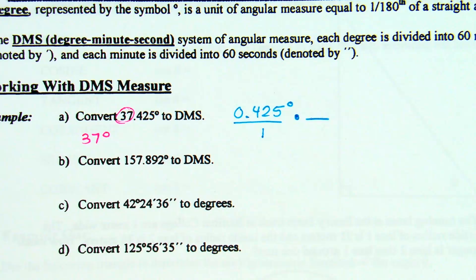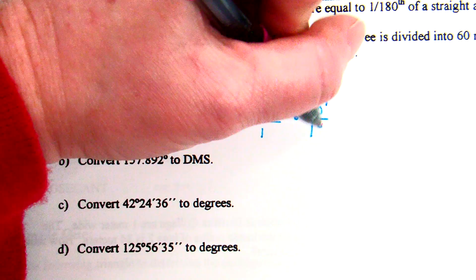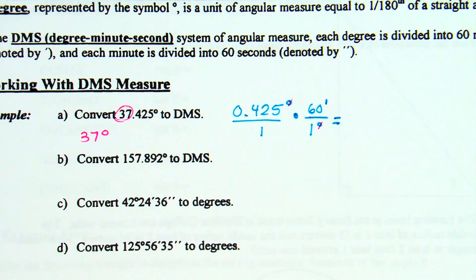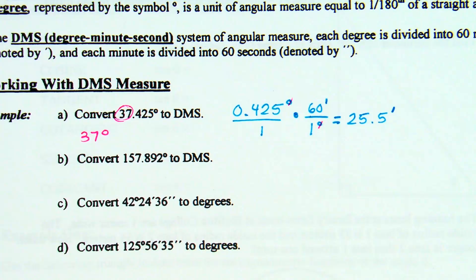Each degree is divided into 60 minutes. So, first thing we're going to do is take this 0.425 degrees times 60 minutes over 1 degree. The degree label can cancel. The calculator tells us that 0.425 times 60 is 25.5, and that officially would be 25.5 minutes right now.